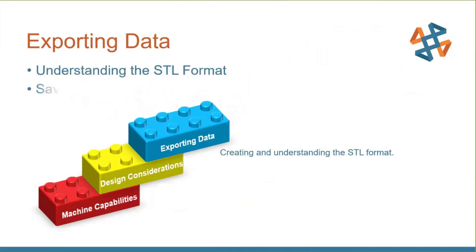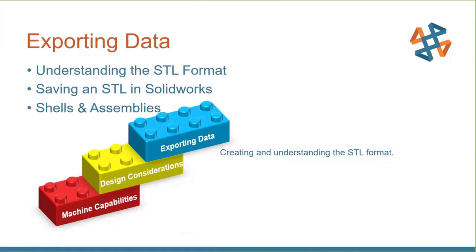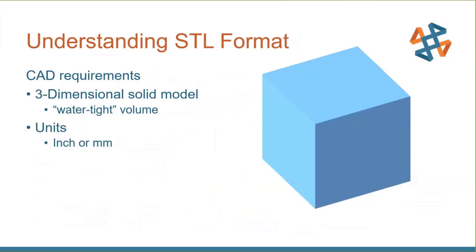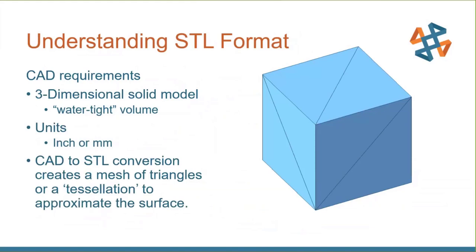Let's look at exporting data. We want to understand the STL format — the most common one. When you look at computer-aided design, these are all mathematical parametric formulas. When you convert to an STL (Surface Tessellation Language), you can no longer have the parametric values. But all CAD packages have translators to export to STL format. The STL format is just a mesh — your CAD needs to be a three-dimensional solid model, watertight. You can't just use a surface model since it has no volume or thickness. Units can be inches or millimeters, and converting to STL makes a mesh of triangles to approximate the surface.